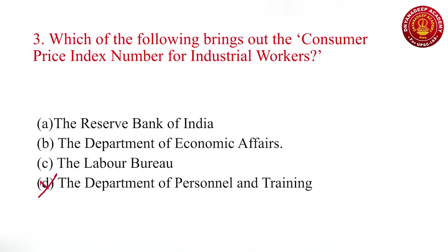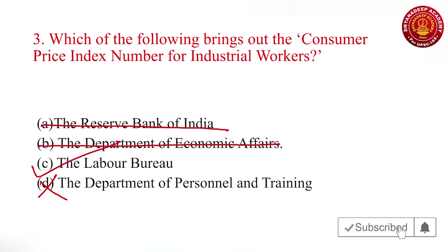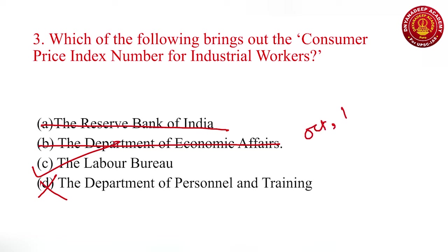The fourth option is the most wrong. RBI is not the case. The answer is Labor Bureau. The consumer price index numbers for industrial workers, one of the most widely used statistics in the country, has been compiled and maintained by the Labor Bureau since the inception of consumer price index in October 1946. Remember this date — October 1946. It has been maintained by Labor Bureau.